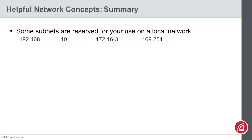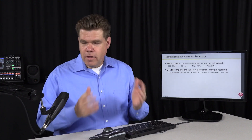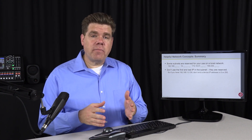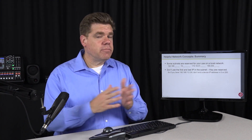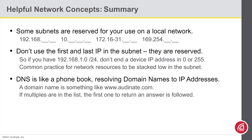Let's review what we've learned in this section. There are subnets reserved for your use on a local network — these addresses will not be found on the internet. Whenever you have a subnet established, there are some addresses to avoid: the first and last IP address in your subnet are not available for use by network devices. For instance, if you have a 24-bit subnet, do not end your IP address in 0 or 255 — all the numbers in between are fair game. It's common practice to stack permanent network resources low in the IP range, leaving higher IP addresses for dynamic devices. And of course, we learned about DNS, which acts like a phone book — it resolves domain names to IP addresses. If multiple DNS servers are in the list, the network device will go down that list one at a time. This isn't a voting system; it just accepts the first server that comes back with a positive response.